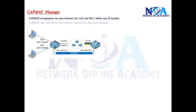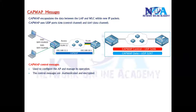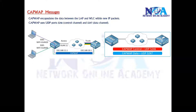CAPWAP actually uses two separate tunnels: one for control information or control messages, and another for the actual data. They use different ports — control messages use UDP port number 5246, and actual data uses UDP port number 5247.